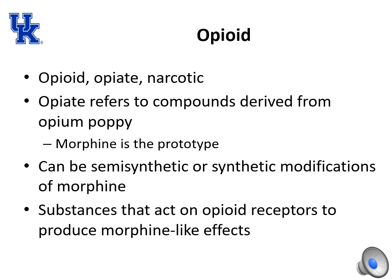When individuals talk about opioids, they typically use the terms opioid, opiate, and narcotic interchangeably. However, each has its own meaning. An opiate refers to compounds — typically natural alkaloids — derived from the opium poppy. Morphine is the prototype; other opiates include codeine and opium itself. As a side note, morphine was originally called Morpheum, after the Greek god Morpheus, the god of dreams.